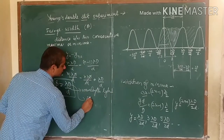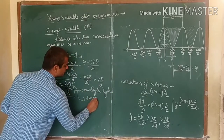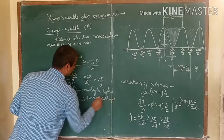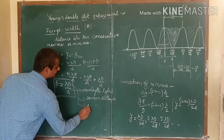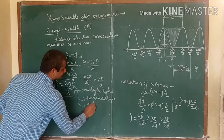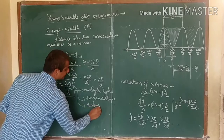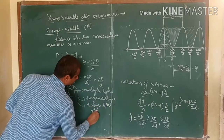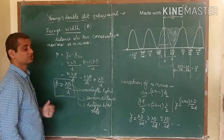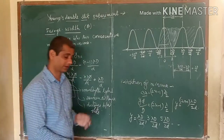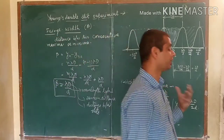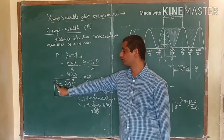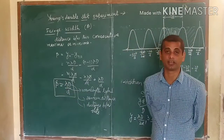Here, D is your screen distance and small d is the distance between the slits. So this is your fringe width formula: β = λD/d. If you increase the screen distance D, your fringe width will increase.